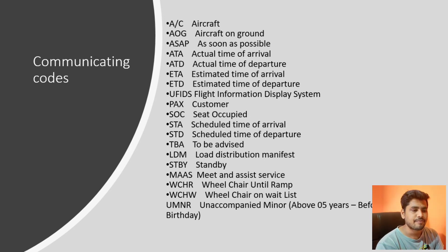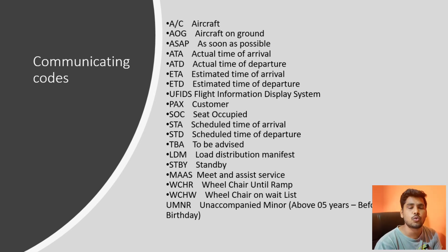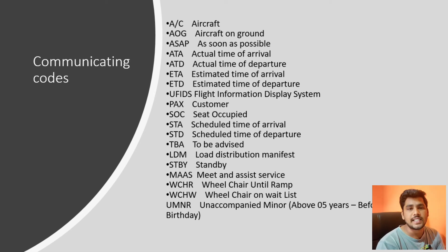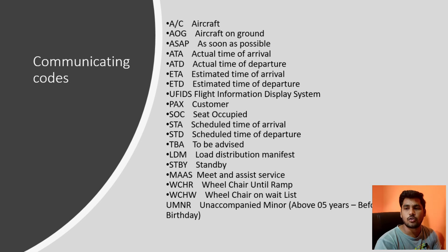Then we have UMNR. The full form of UMNR is Unaccompanied Minor. Basically, if any passenger whose age is between 5 to 12 years is traveling alone on a flight, those passengers we call UMNR — Unaccompanied Minor. What procedures we have to follow for UMNR, we will go into deeply in our course.